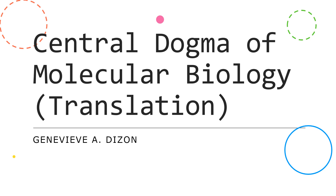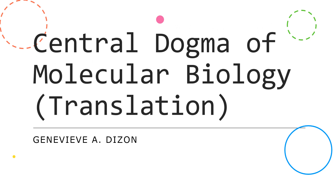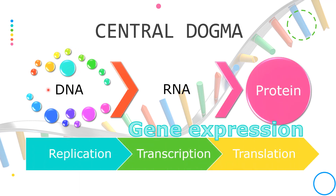Hello, everyone. This is our third and last video about the central dogma applied in molecular biology, and this video will focus on the process of translation. In the last two videos, we discussed how the instructions for making proteins are written in the cell's DNA in the form of genes, and these genes are used to build a protein in a two-step process called the gene expression pathway. The first step is transcription, where the DNA sequence of the gene is rewritten as RNA. The second step, translation, is where the mRNA is decoded to build a protein.